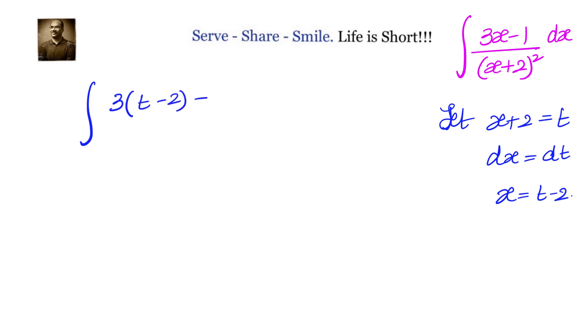Divided by x plus 2 whole square, that is t square, multiply with dx, which equals to dt. So the given problem is changed as 3t minus 7 divided by t square dt.